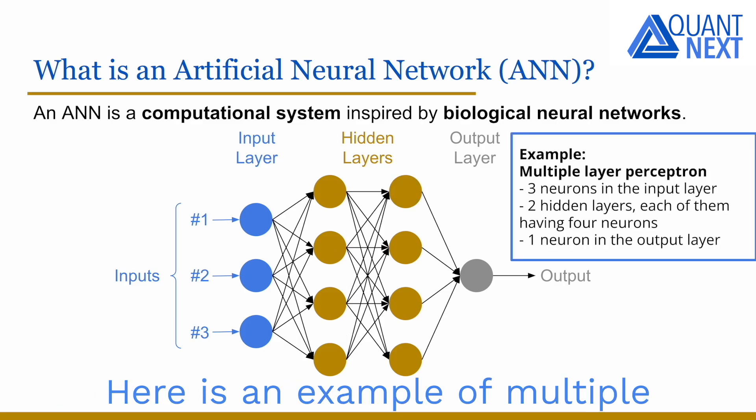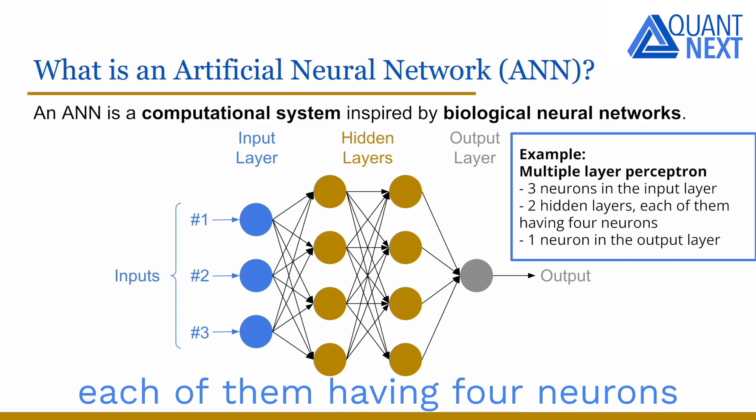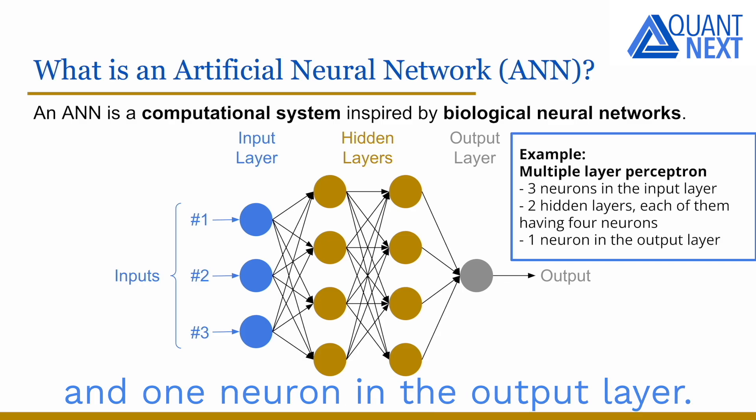Here is an example of multiple layer perceptron, with three neurons in the input layer, two hidden layers, each of them having four neurons, and one neuron in the output layer.